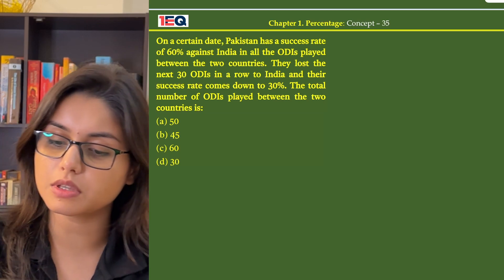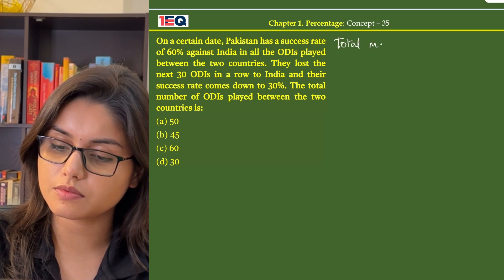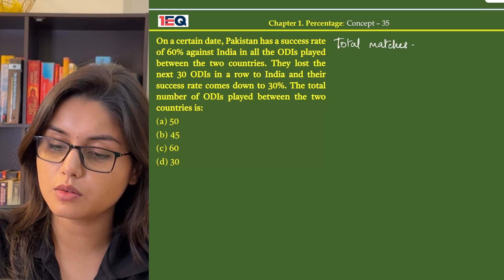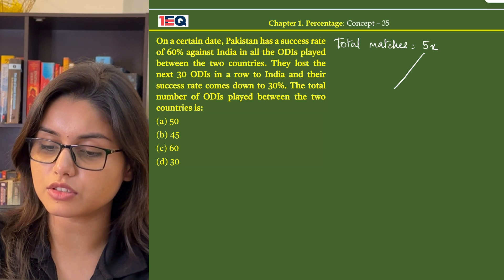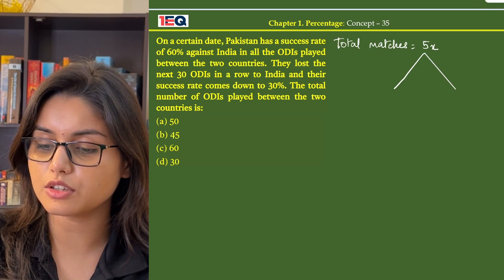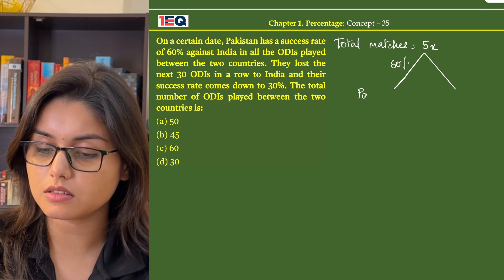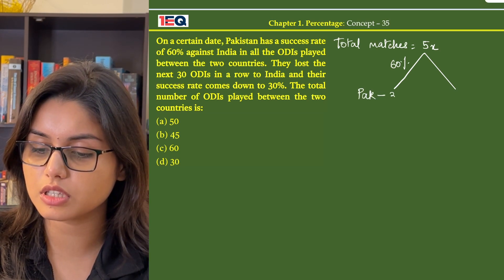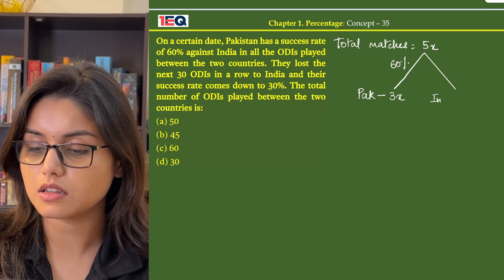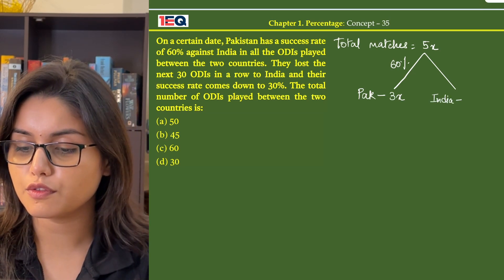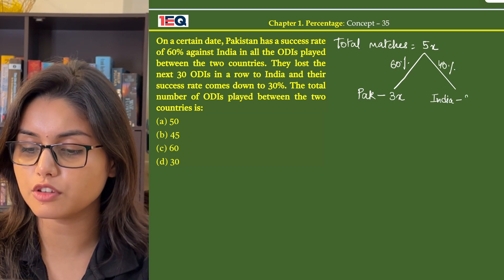Let the total number of matches be 5x. Out of 5x matches, the success rate of Pakistan is 60%, which means Pakistan would win 3x number of matches. The success rate of India is 40%, which means India would win 2x number of matches.